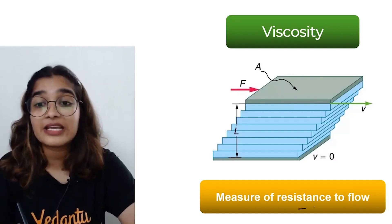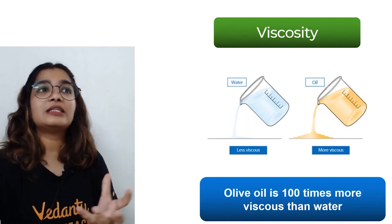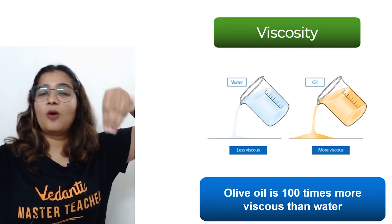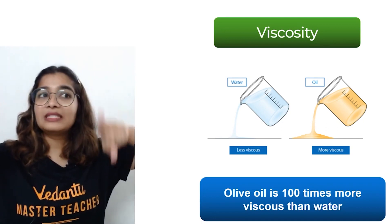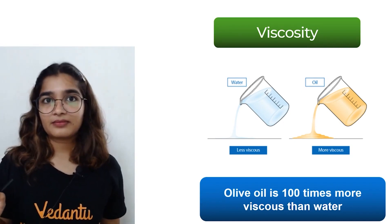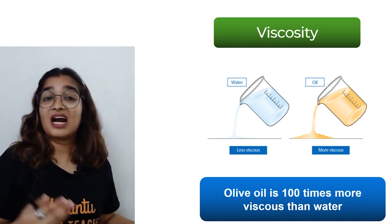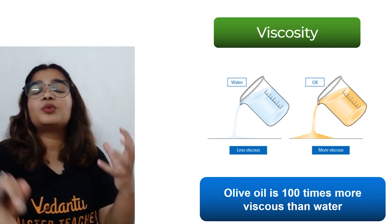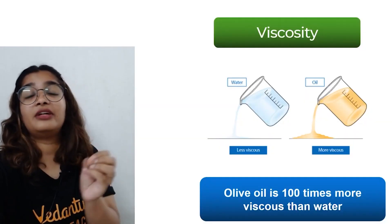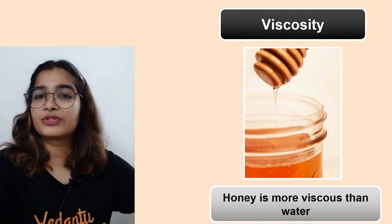Viscosity is the measure of resistance to flow. If you compare water and oil in containers, water flows faster — oil is more viscous than water. Honey is also more viscous than water. Olive oil is a thousand times thicker than water. That is what viscosity means.